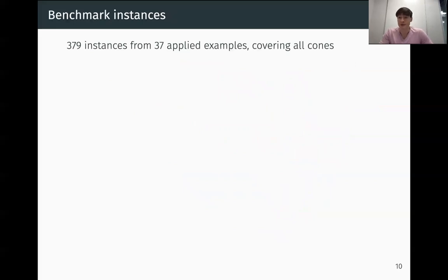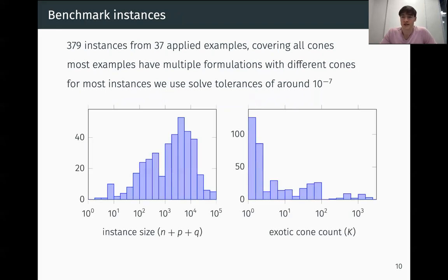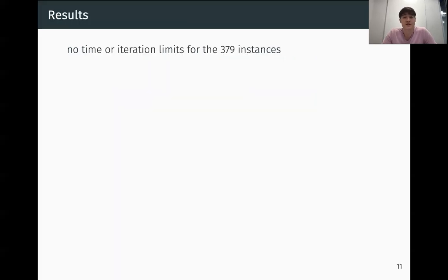To test these enhancements, we come up with a benchmark set of 379 instances generated from 37 different applied examples, covering all of Hypatia's cones. Most of these examples actually have multiple formulations with different cones, so it ends up being hundreds of different formulations. For most of the instances, we use solve tolerances of around 10 to the negative seven, which is fairly standard for interior point methods. And here's some histograms summarizing those instances. On the left, we have the instance sizes. So this is the sum of the cone dimensions. And on the right, we have the number of exotic cones that make up the Cartesian product cone in the problem.